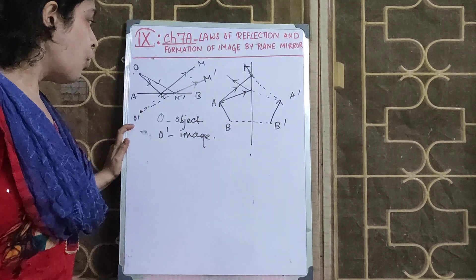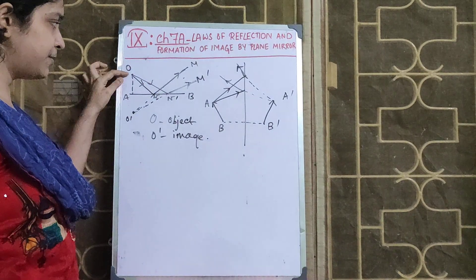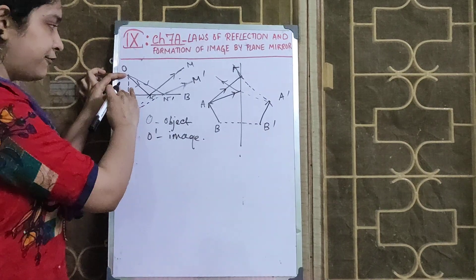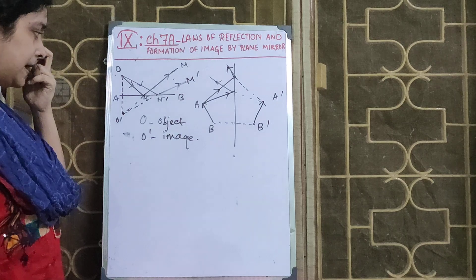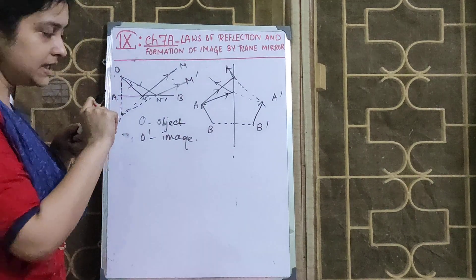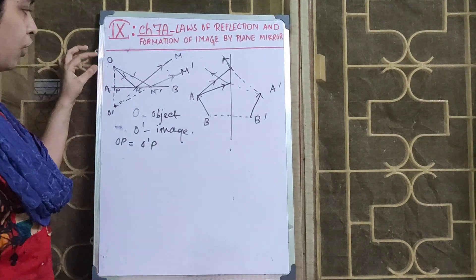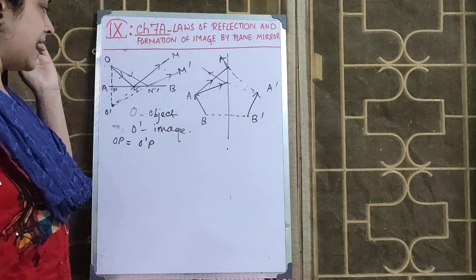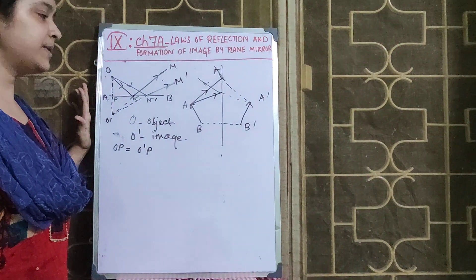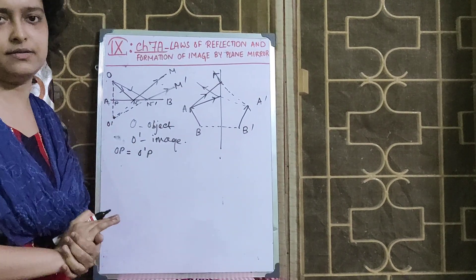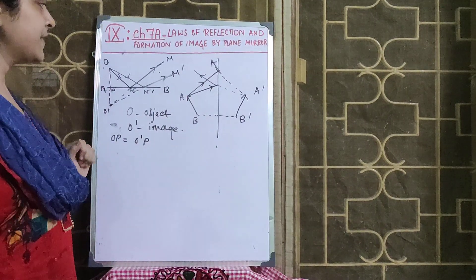In a plane mirror, the object distance — the perpendicular distance of the object from the reflecting surface — is always equal to the image distance. So if P is the foot of the perpendicular, OP equals O'P always, for a plane mirror. There is a proof in your book using congruency of triangles to prove that this distance equals this distance, but for an exam you don't need to learn this proof.